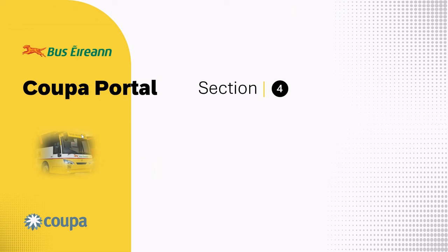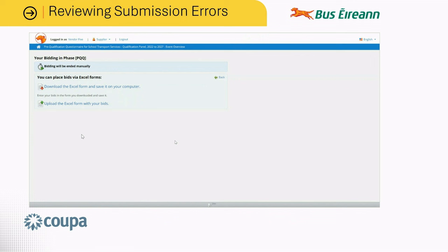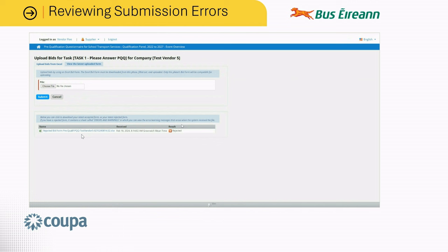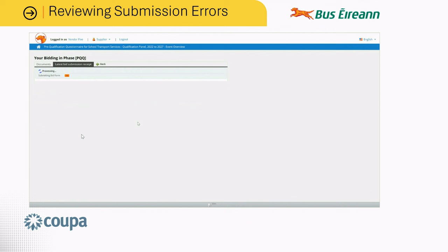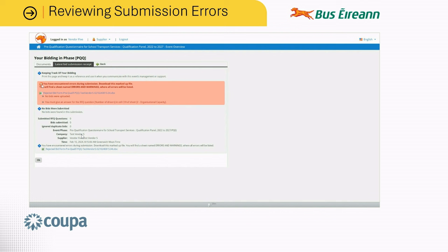Section 4: Reviewing Submission Errors. There may be occasions whereby when you are submitting your response you encounter some errors in your submission. The following will demonstrate what to do in this situation. In this example we are submitting the form and you can see that it is processing. However, we have received a red error message saying that we have encountered errors during the submission. This is not a problem as the system will actually help you identify where the error lies so you can rectify the problem and hopefully successfully submit your bid thereafter.